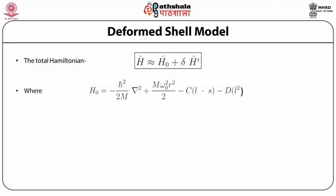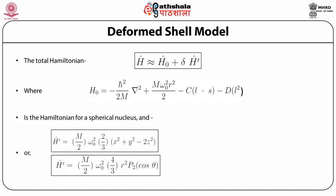H₀ is given by −(ℏ²/2m)∇² + mω₀²r²/2 − c(l·s) − d·l², which is the same Hamiltonian used for the spherical shell model. The perturbation Hamiltonian H' = (m/2)ω₀²·(2/3)(x² + y² − 2z²), or equivalently H' = (m/2)ω₀²·(4/3)r²·P₂(cosθ), where P₂(cosθ) is the spherical harmonic of order 2 and cosθ = z/r.